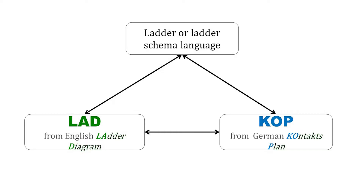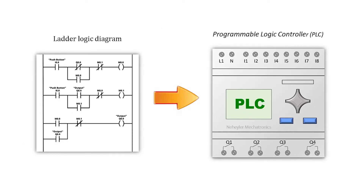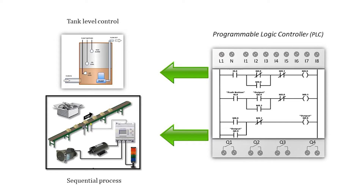The ladder diagram language, also known as L.A.D., from the English 'ladder diagram', or simply K.O.P., from the German 'Contacts Plan', is one of the most used graphic languages to program a PLC, which helps us to automate and control different industrial processes.